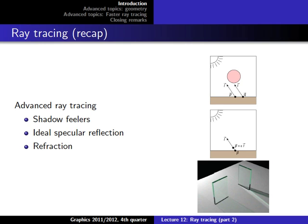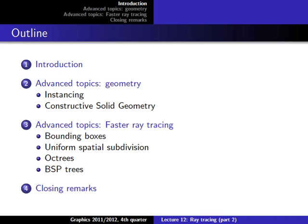While shadows and refraction can be done in projective methods too, in ray tracing they fit very naturally into the general framework. Today we'll talk about more advanced ray tracing topics. The first topic is related to the geometry of models used in ray tracing. In projective methods we mostly deal with triangles because they are hardware supported, and speed is a critical issue especially for games.